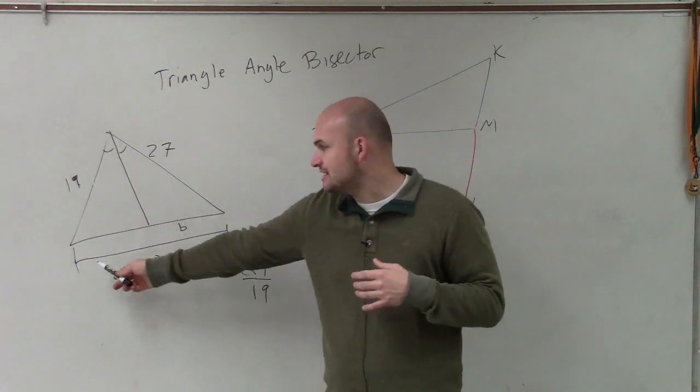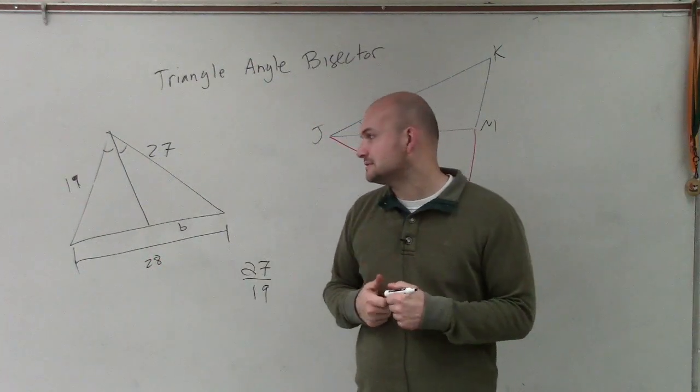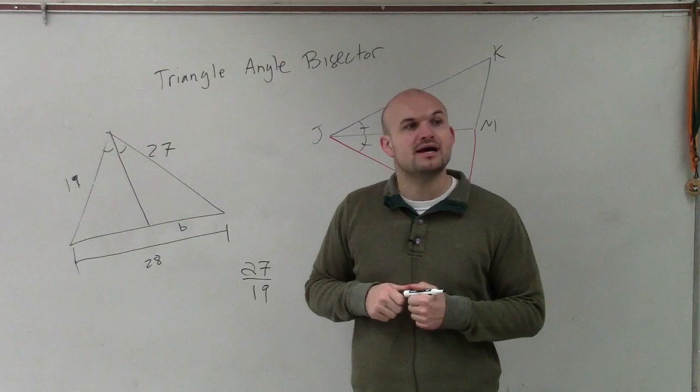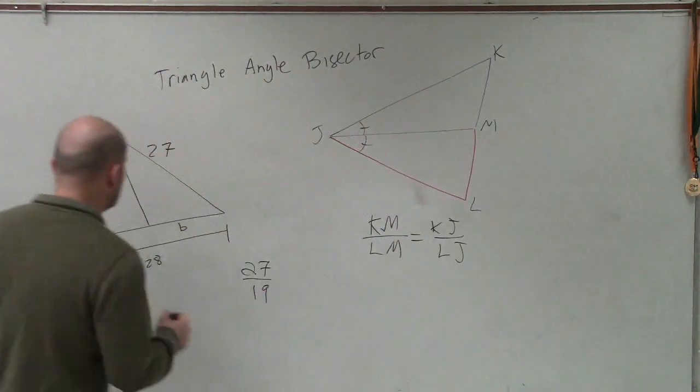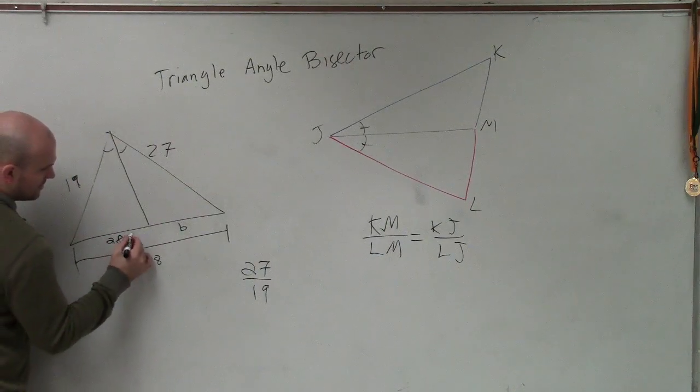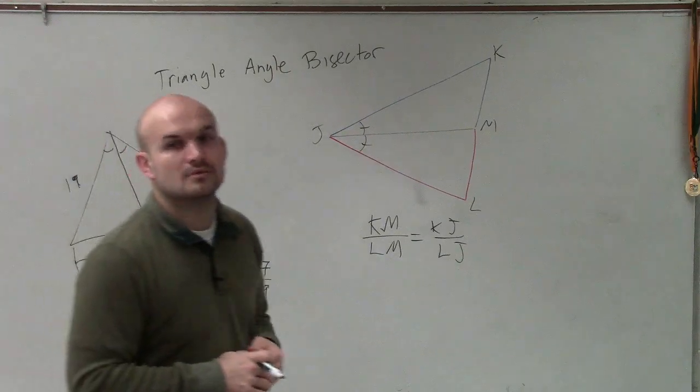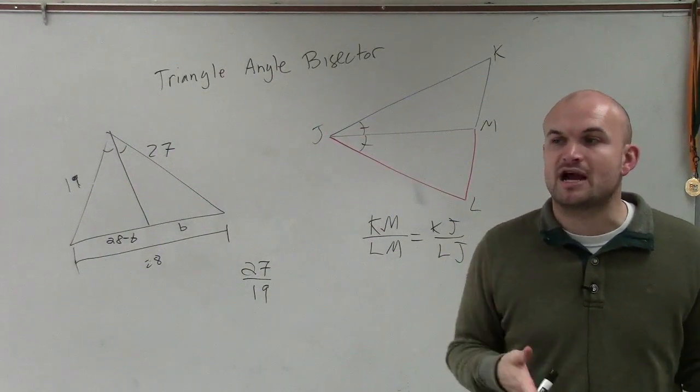So if this is B and this whole thing is 28, what does this have to be? Then you have more variables, yeah? Close. It's going to be 28 minus B. So you're going to want to take the length of 28 and then subtract B.